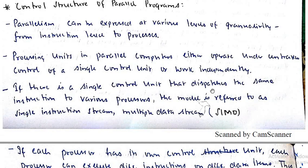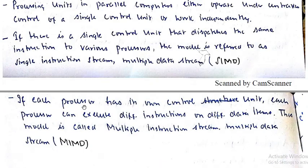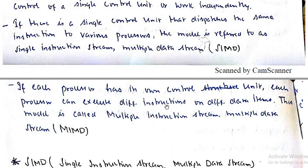If there is a single control unit that dispatches the same instruction to various processors, the model is referred to as Single Instruction stream Multiple Data stream, i.e., SIMD. One control system gives the same operation to all processors. If each processor has its own control unit and can execute different instructions on different data items, this is MIMD — Multiple Instruction stream Multiple Data stream.